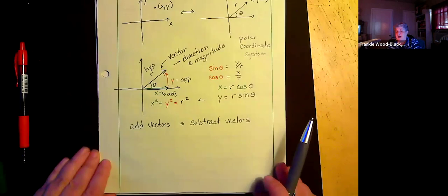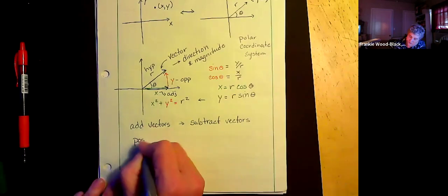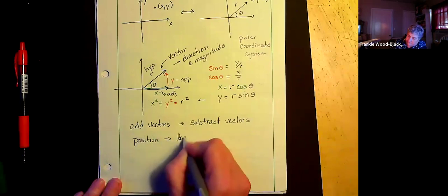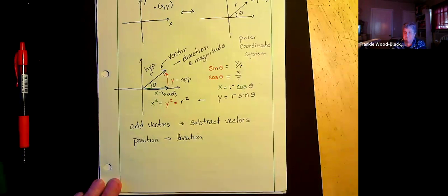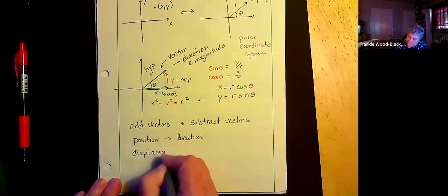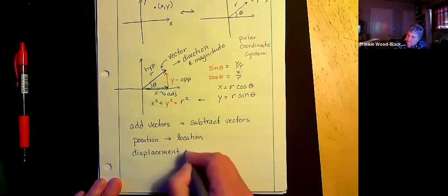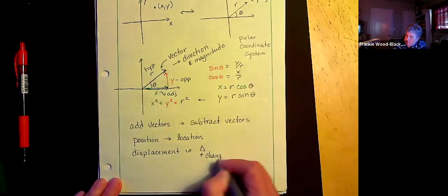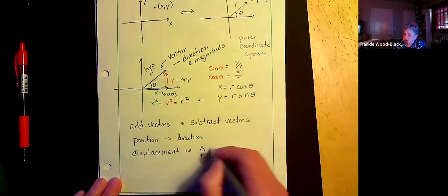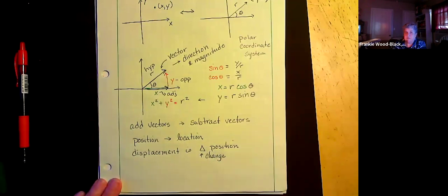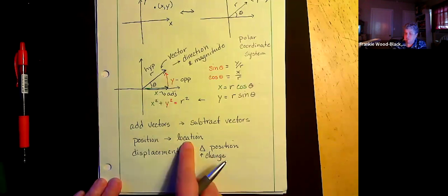We're going to go back and forth between coordinate systems. And we are going to define position. Position is a location. Displacement is a change. And we're going to use this symbol for change. We're going to use that as a change in position. So displacement is a change in position. Position is a location.